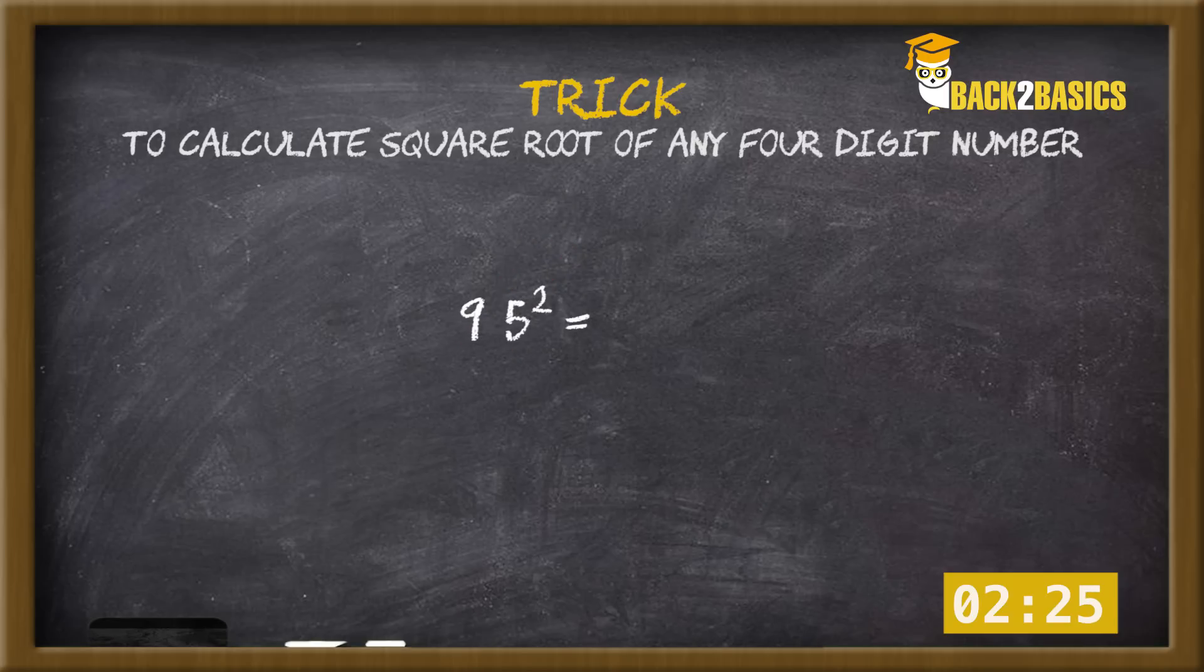Again, 95 square can be calculated the same way. 5 square equals 25 and 9 into 10 gives 90, which gives us 9025. This was all about squares of any number ending with 5.